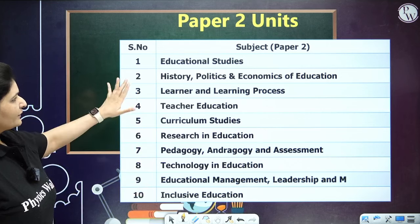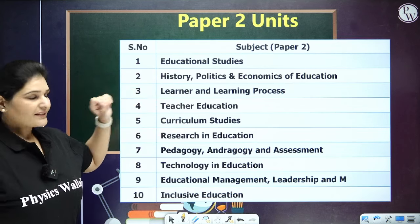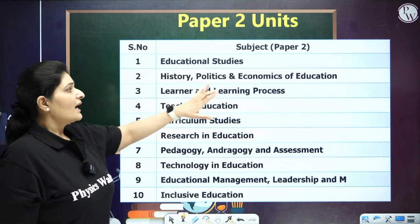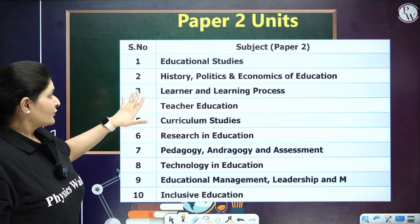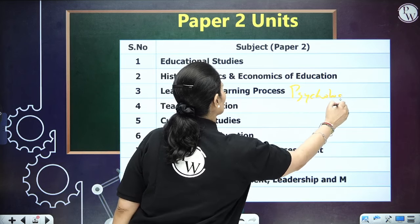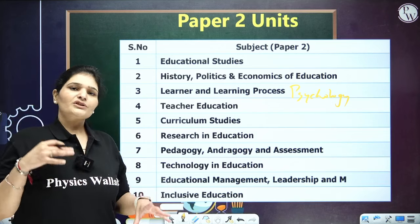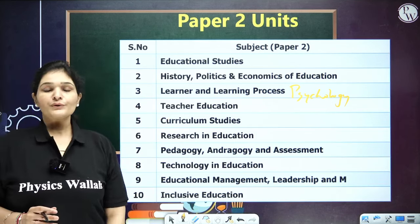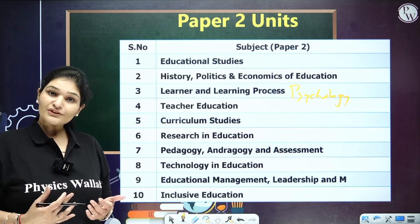Let's look at the 10 units. Unit 1 is Educational Studies — philosophy, sociology, along with national values. Unit 2 is History, Politics, and Economics of Education — various commissions related to education, economic and political theories. Unit 3 is Learner and Learning Process — educational psychology-related questions. Unit 4 is Teacher Education — everything related to NCTE, UGC, different models. Unit 5 is Curriculum Studies — curriculum models, how they are designed and evaluated.